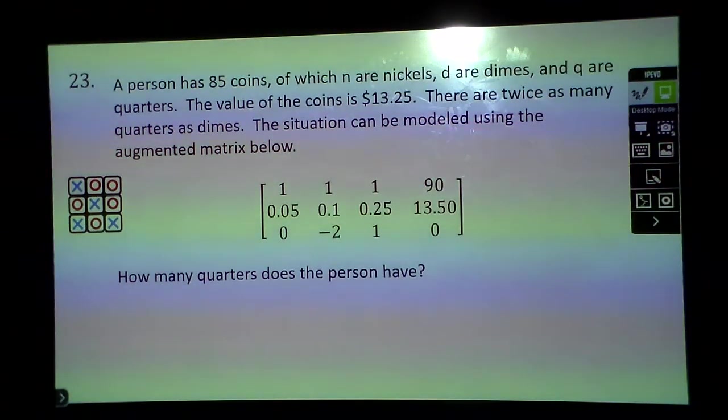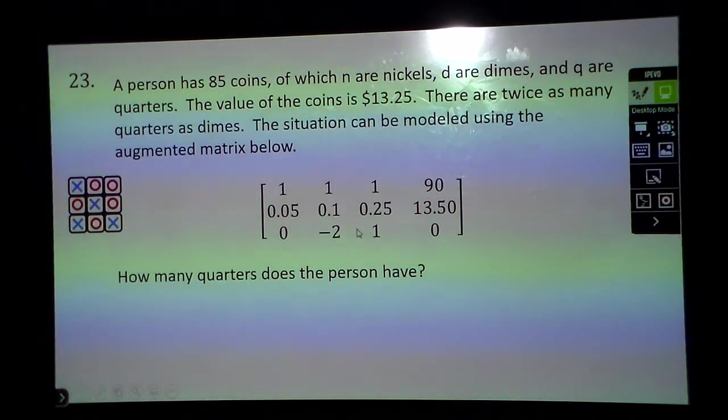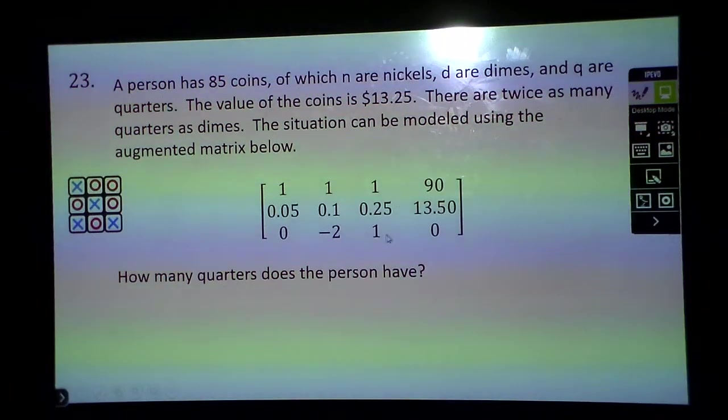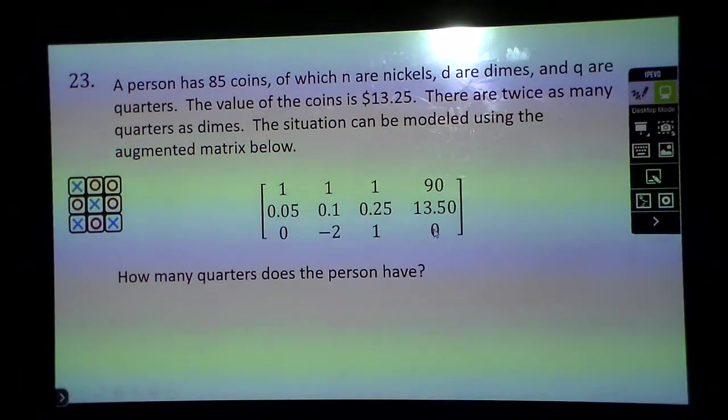They're going to set up a matrix like this below here because nickels are worth 5 cents, dimes are worth 10 cents, quarters are 25 cents, total is $13.50. We know how many coins add up to 90 coins. We want to know how many quarters the person has. It says there are twice as many quarters as dimes, so basically if I take two times the number of dimes it equals the number of quarters. If I make one of these negative and one positive, it will equal zero because I don't know how much there actually is. That's how I set this up.